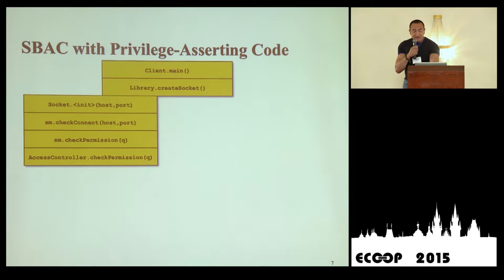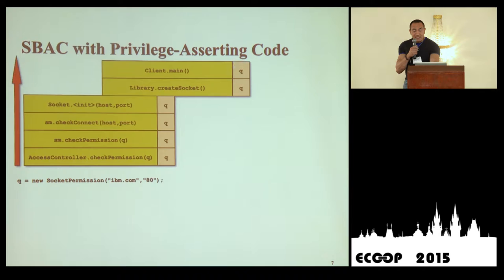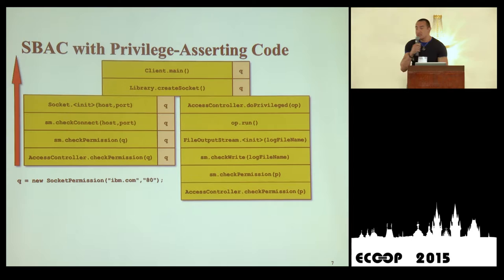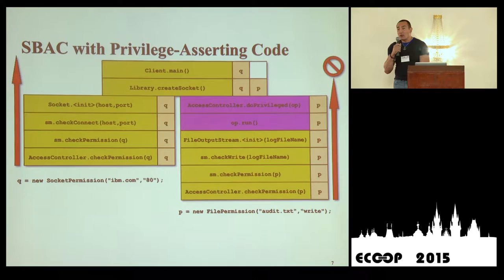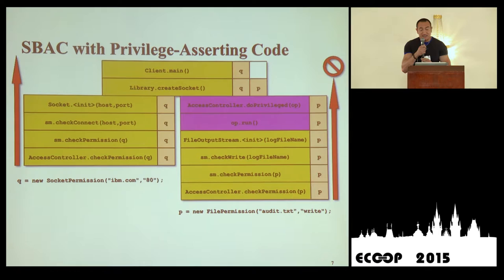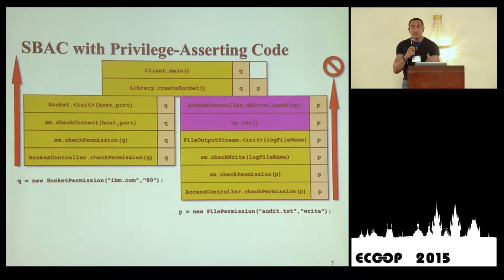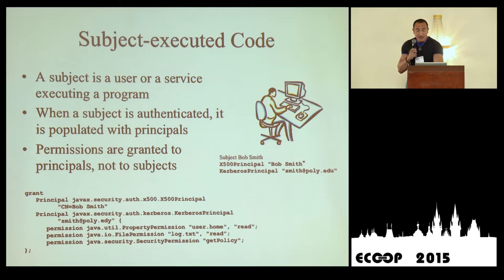To present this graphically: on the left side, we have the call to the socket constructor that requires the permission to open the socket — call this permission Q. On the right-hand side, we have the call to open the file output stream, but this call is preceded by the do-privileged API. When do-privileged is called, the stack inspection mechanism stops at the caller of do-privileged. So all the code on the stack up to the caller of do-privileged is demanded the permission to open the file output stream, but above that call, that permission will not be demanded. The client application will not be demanded to have the permission to write to the log file. All these things are necessary in Java and in Microsoft .NET, but it's now necessary to model them statically.